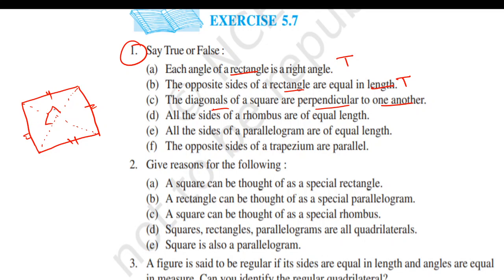If you are well versed and know about the properties of the types of quadrilaterals, then you can definitely solve these questions. All the sides of a rhombus are of equal length — in a quadrilateral, both the square and the rhombus have all sides equal, so that will also be TRUE. Diagonals of a square are perpendicular to one another — this is also TRUE.